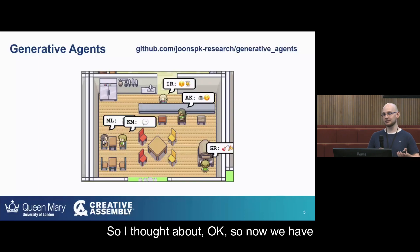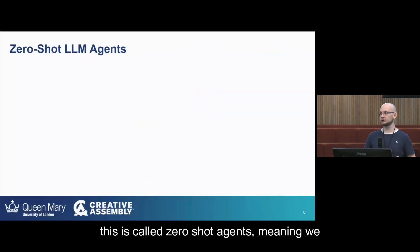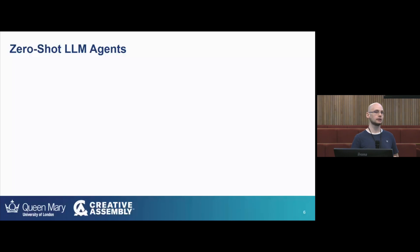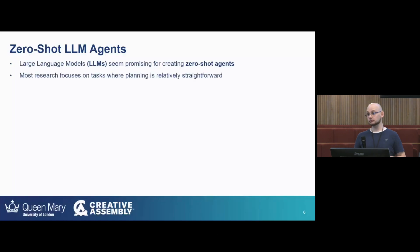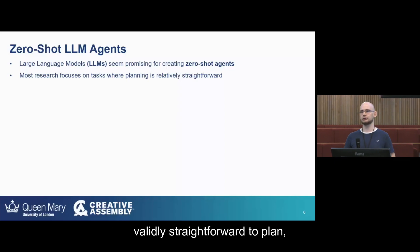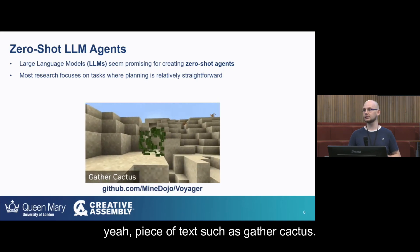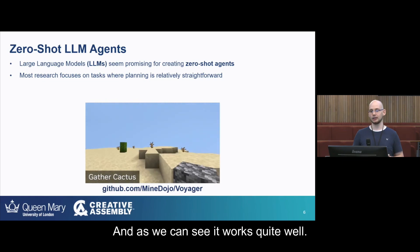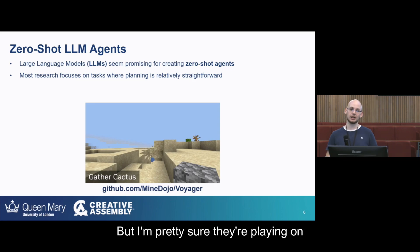I thought about whether we could use large language models to play games — and this is called zero-shot agents, meaning an agent that plays a game without requiring any training. Large language models are perfect for this because they're already pre-trained, and we can leverage their knowledge and apply it to games directly. There's already a lot of work on zero-shot agents, but it mostly focuses on games that are relatively straightforward to plan, such as Minecraft. The Voyager agent takes a text input like 'gather cactus' and generates code to play Minecraft — it doesn't play directly, it just generates code — and as we can see, it works quite well.